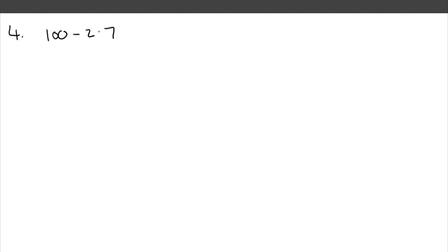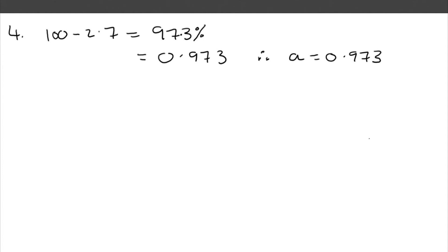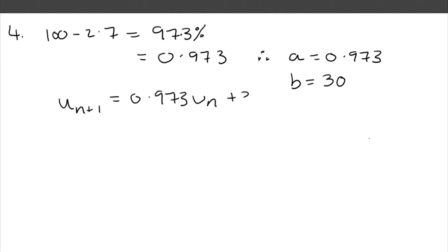Question 4: in a forest, the population of mice is falling by 2.7% each year. To get the multiplier for a decrease of 2.7%, you'll have 97.3% of mice year on year, so the decimal is 0.973. Therefore a = 0.973 in the recurrence relation. Scientists release 30 mice at the end of March each year, so b = 30. The recurrence relation is u_{n+1} = 0.973u_n + 30.